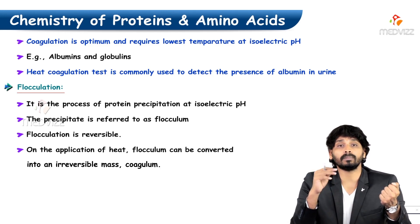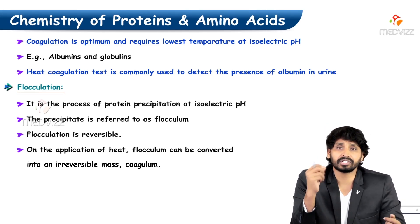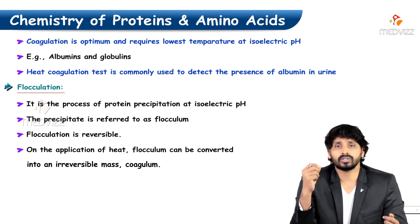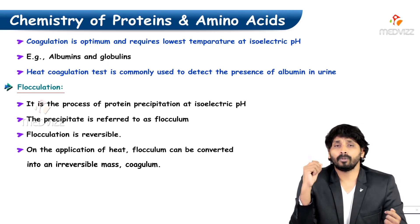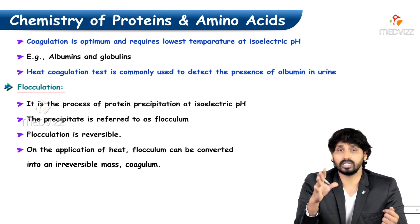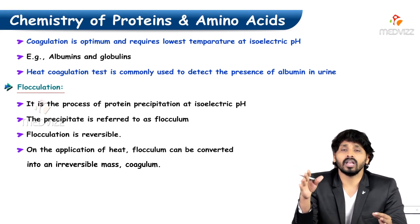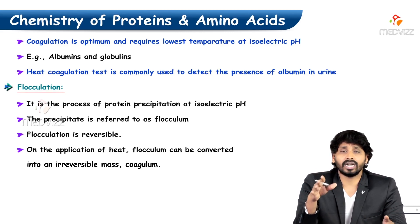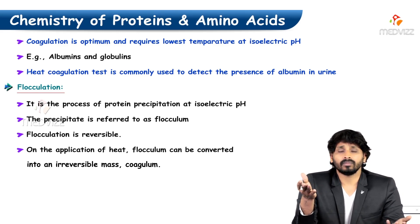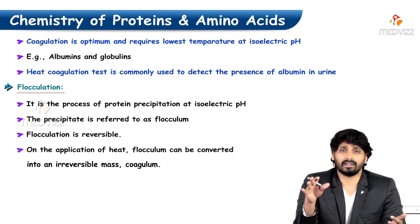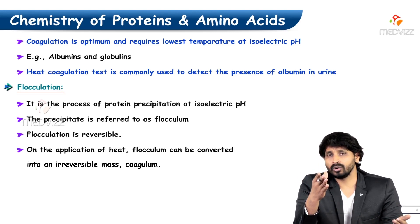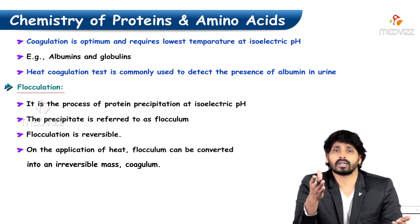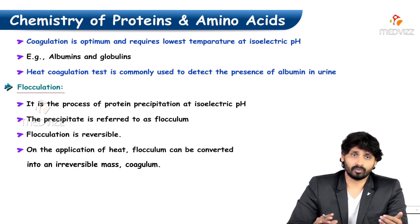Heat coagulation is a common test used to detect the presence of albumin in urine. If a person has a kidney problem such as nephrotic syndrome, the kidney cannot perform its reabsorption function and simply allows proteins such as albumin to be excreted in the urine. When the collected urine is heated, if albumin is present it will coagulate, allowing identification of nephrotic syndrome through the heat coagulation test.